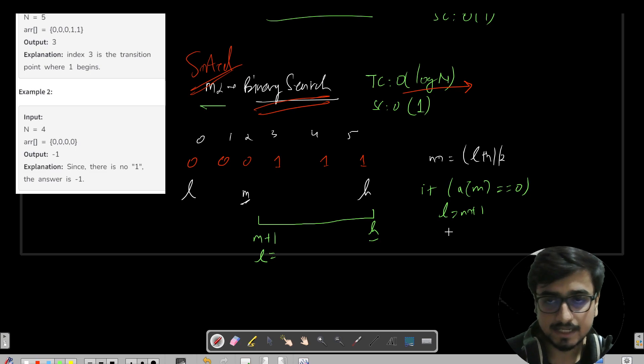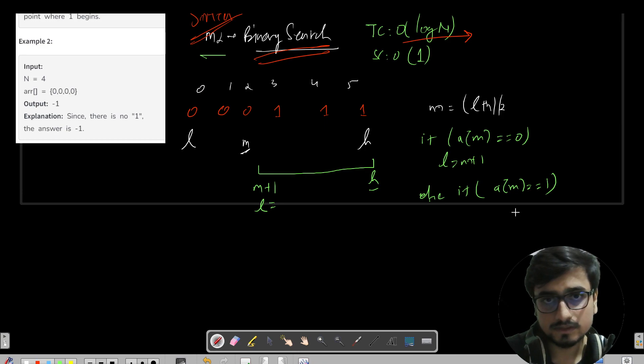So let's handle this condition. What I will write: if array of m is zero, then definitely I need to make a binary search in the right hand side, so I will say l is equals to m plus 1, h remains as it is. Now there would be an else if case - else if case will say that if the mid index is equals to one.